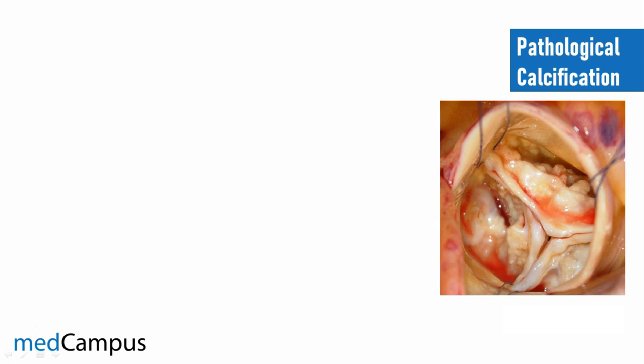But sometimes in pathological situations there is altered calcification — instead of calcium getting deposited into the bones, it gets deposited into different organs of the body. For example, it gets deposited in the kidney, which we call nephrocalcinosis, or it goes into the skin, which we call calcinosis cutis.